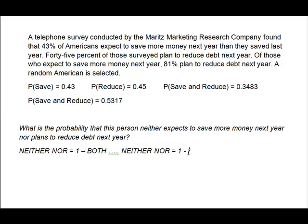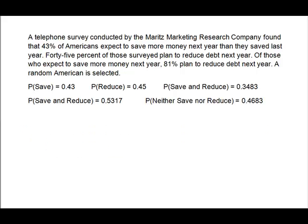So it's simply 1 minus 0.5317, which gives me 0.4683. The probability that a person neither expects to save more money nor plans to reduce debt next year is 46.83%. In the big picture, save and reduce is like saying yes/yes, and neither nor is like saying no/no — they're the opposite ends of the spectrum. That's why both plus neither will always equal 1.